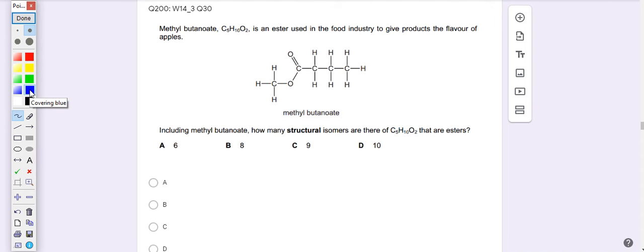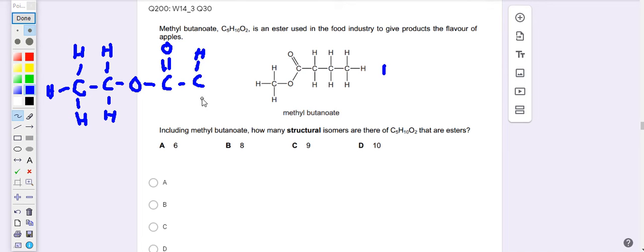What I do is I will normally draw the compound with no branches first. Now methyl butanoate, this is one isomer. Now the second one, I will change this COO to the next carbon, so I have CH3, then CH2, O, C=O, then another CH2 and one CH3. So this is the second one.